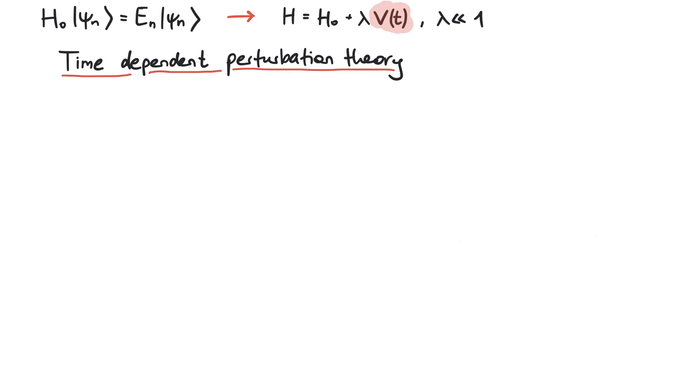In particular, the problem will sound something like this. Our system is in an initial eigenstate of the Hamiltonian, psi i, with energy Ei. At time t equals zero, we turn on a potential, v of t.